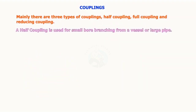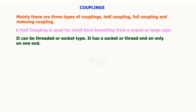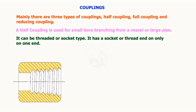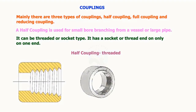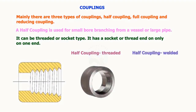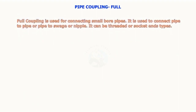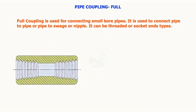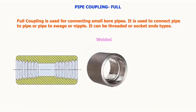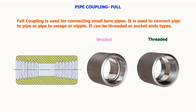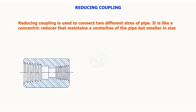Mainly there are three types of couplings: half coupling, full coupling, and reducing coupling. A half coupling is used for small bore branching from a vessel or a large pipe; it can be threaded or socket type, with a socket or thread end only on one end. Full coupling is used for connecting small bore pipes — to connect pipe to pipe, or pipe to swage or nipple — and can be threaded or socket end types. Reducing coupling is used to connect two different sizes of pipes; it is like a concentric reducer that maintains the center line of the pipe but is smaller in size.